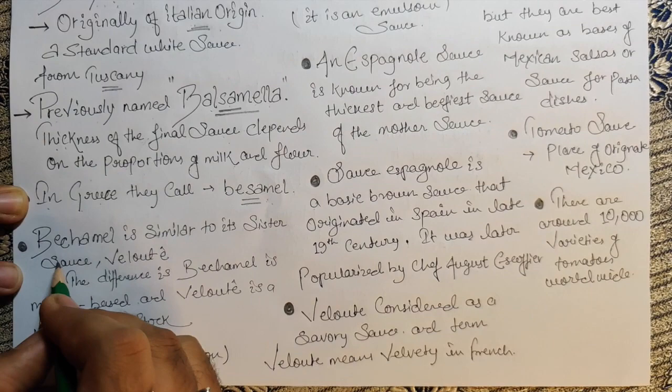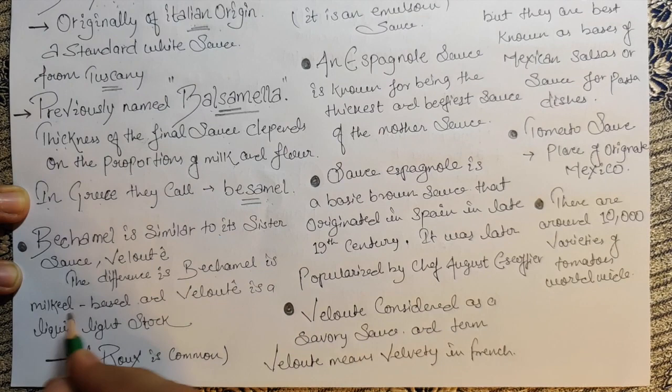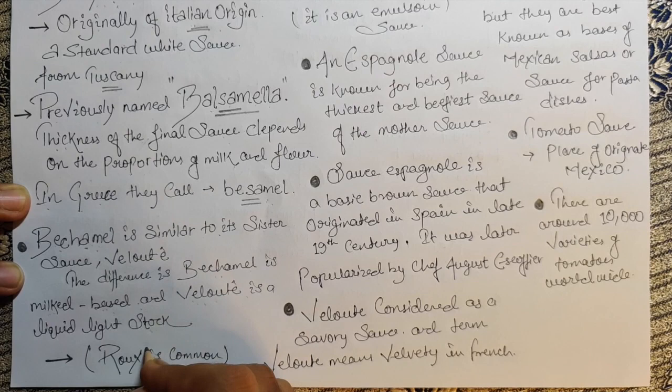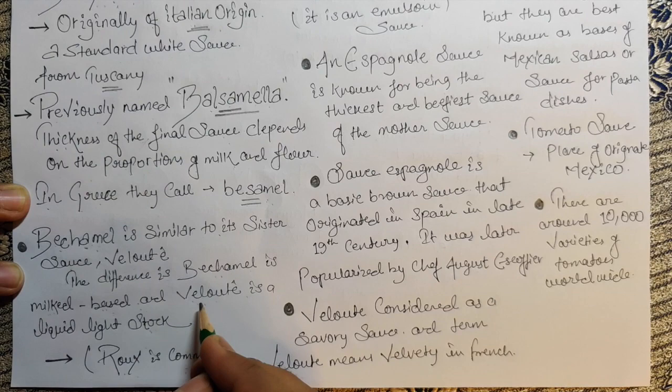Béchamel is similar to its sister sauce, velouté. The difference is béchamel is milk-based and velouté uses a light stock. The common element between them is roux. So here we use milk; for velouté we use stock. Velouté comes in three types: fish, chicken, and meat. Depending on your dish, you choose your stock and add roux — your velouté is ready. For béchamel, you add milk to roux and it's done.